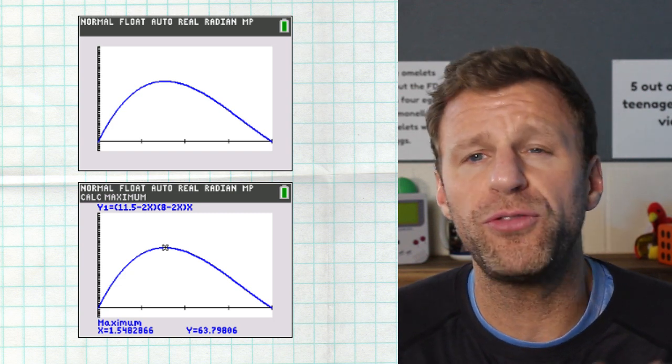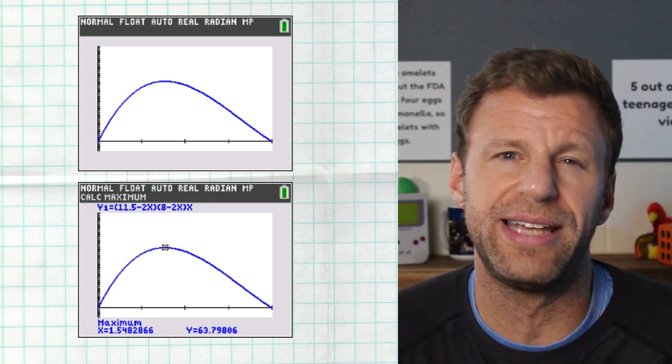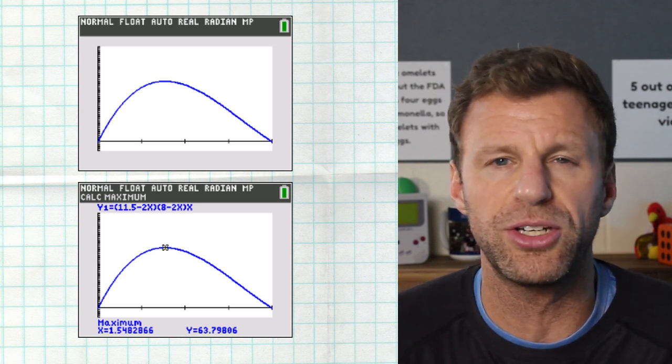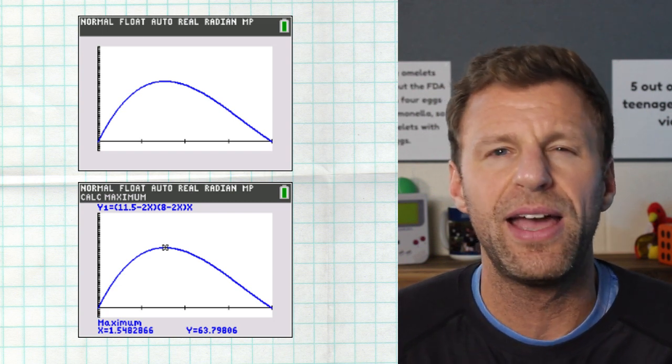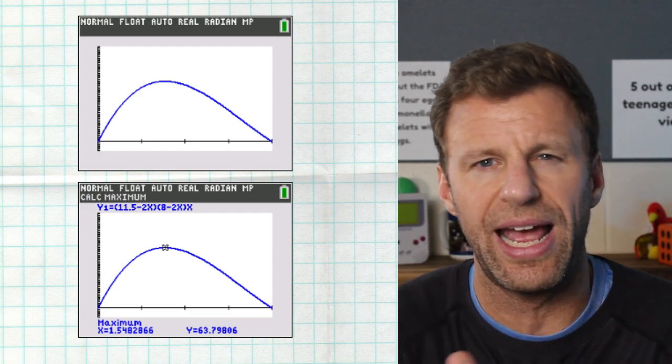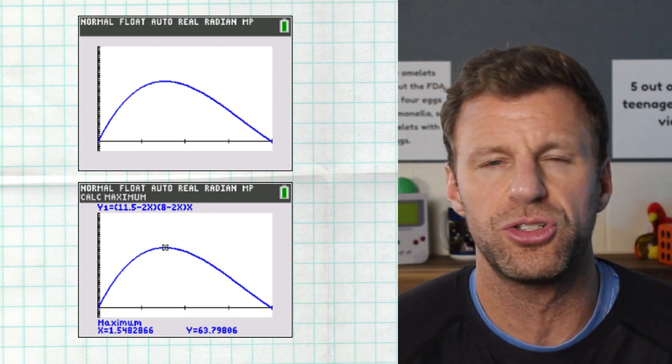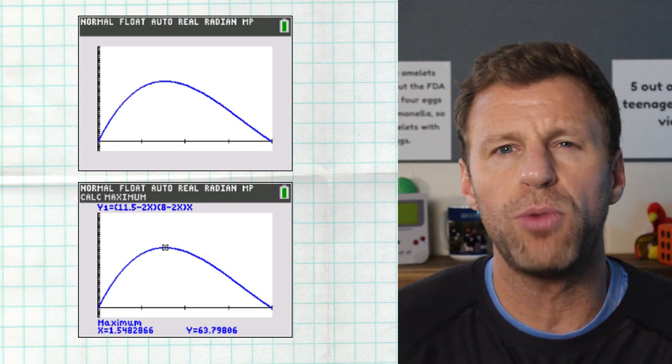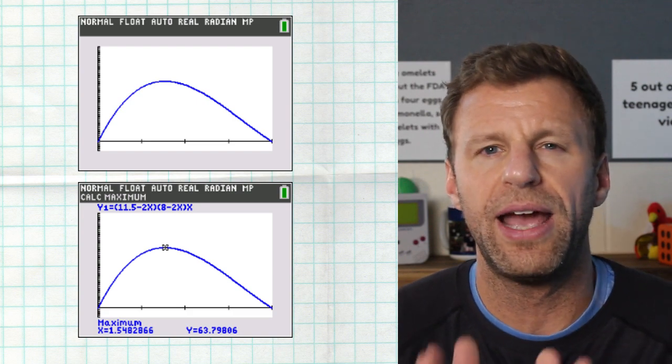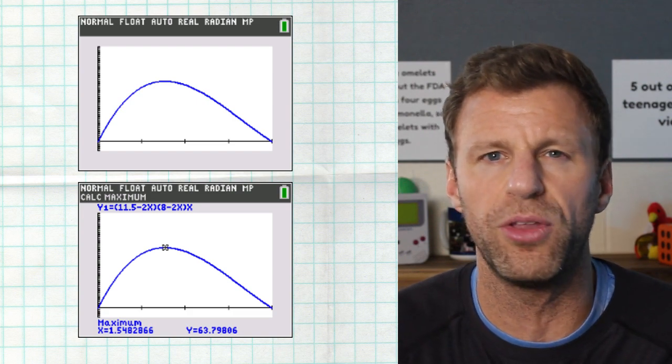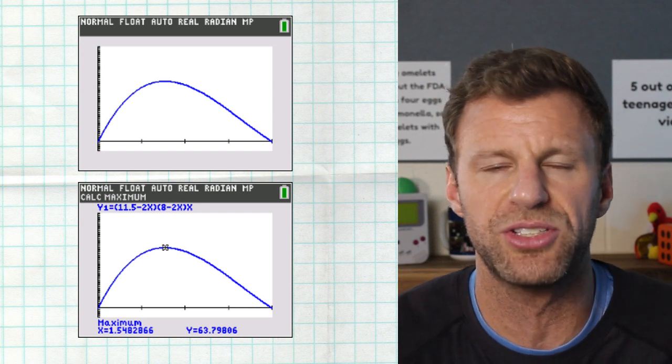So, how do we find that max? Well, if you hit second trace on your calculator, there is a command for maximum. All you've got to do is select the maximum command, and then it's going to ask you to do three things. It's going to ask you to click somewhere on the left, so just move your cursor a little bit to the left, somewhere on the right, move your cursor a little bit to the right, and then you're going to go ahead and guess somewhere in the middle. As long as you're close, you're going to get the right answer.